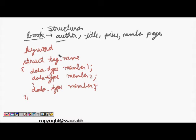So this is the declaration of structures. Now let's see how we define our book structure. We will write struct book, which is the tag name here.